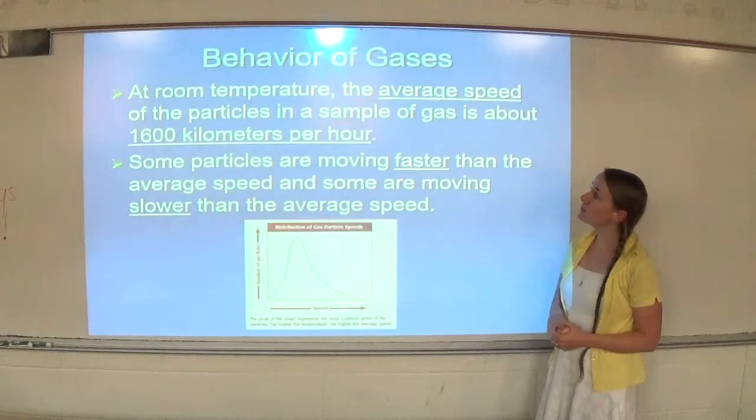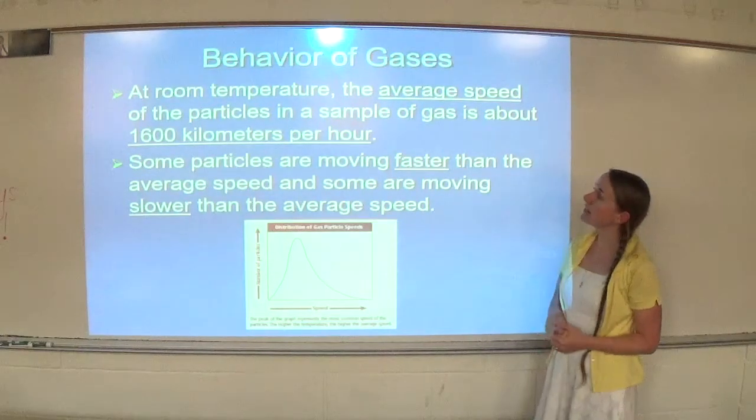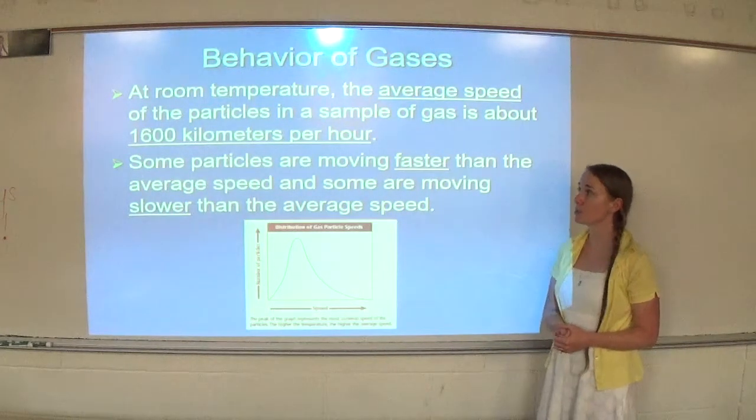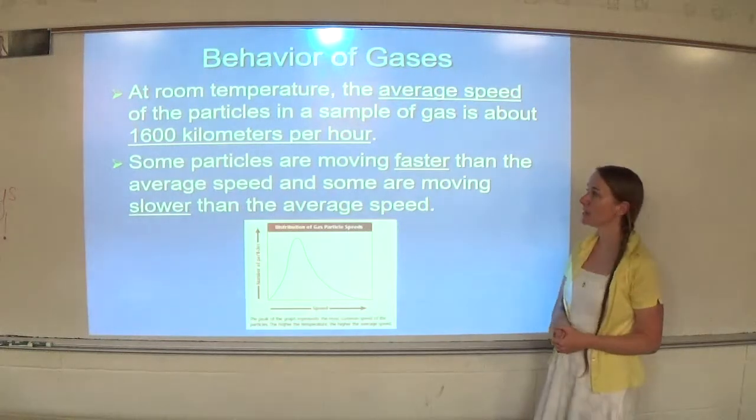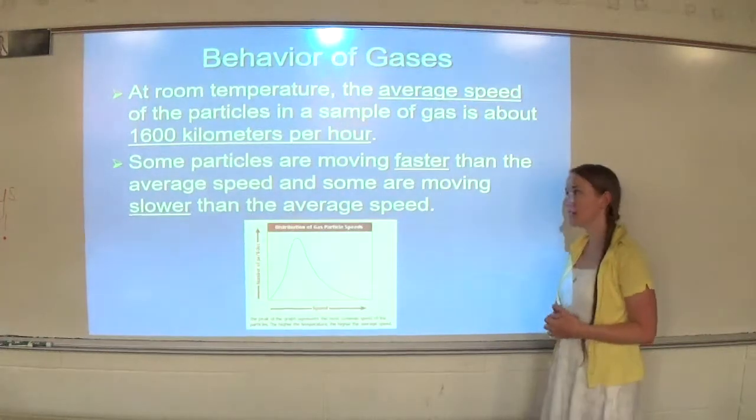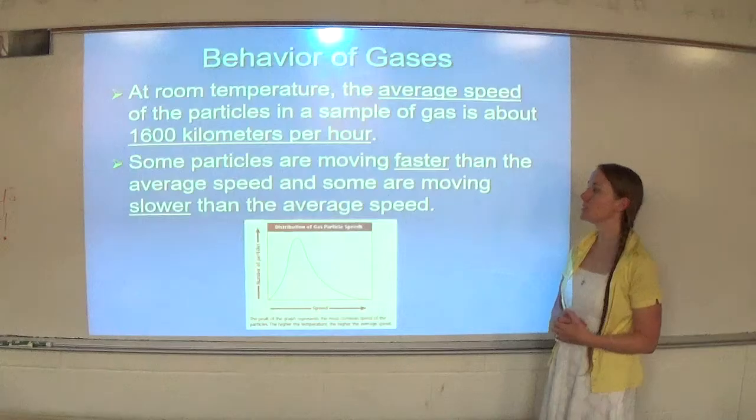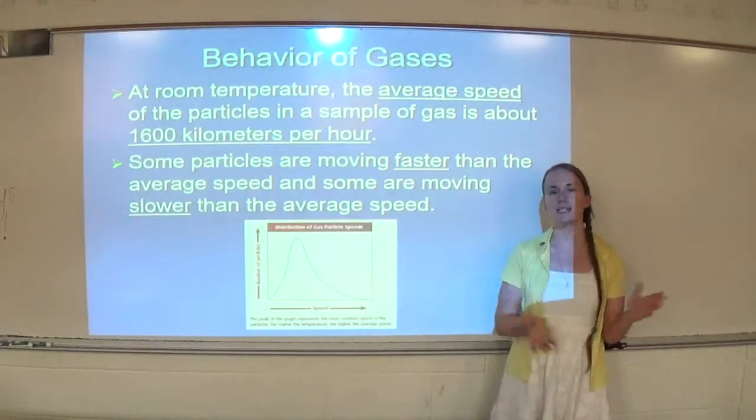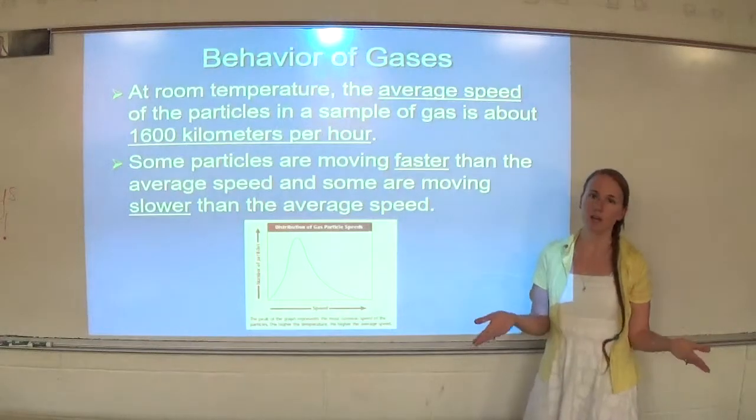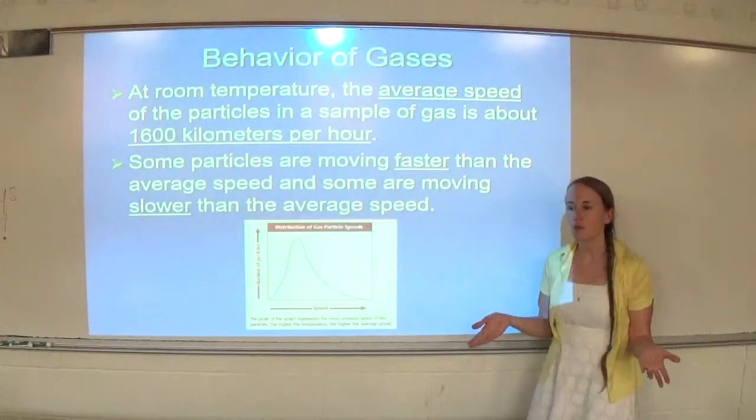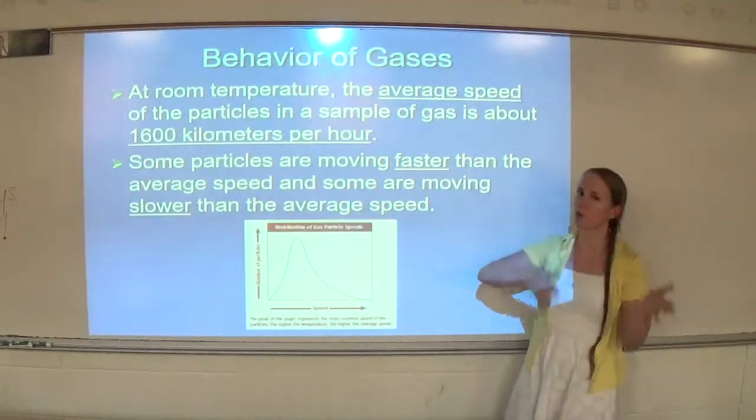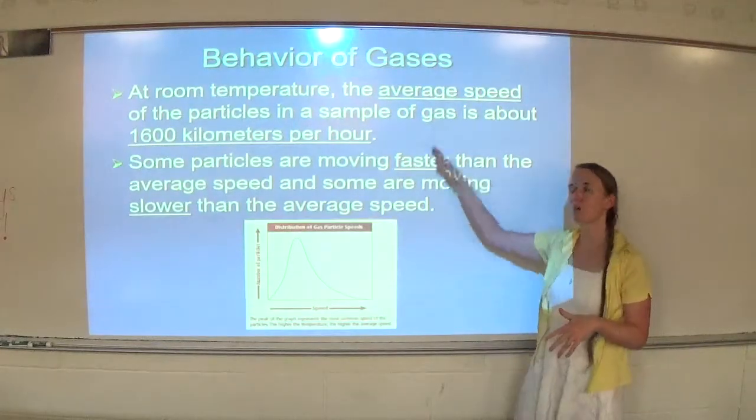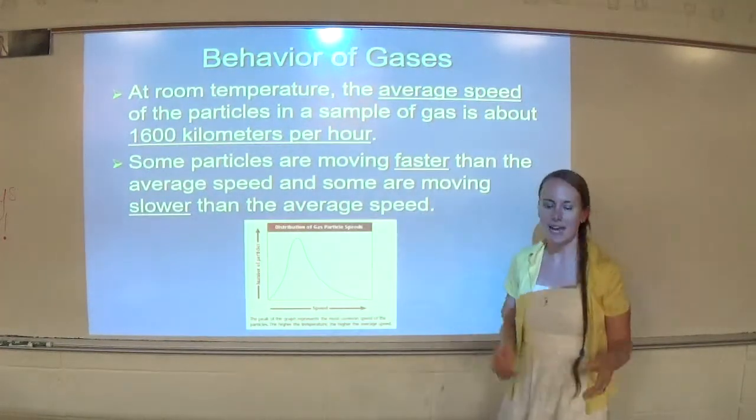At room temperature, the average speed of the particles in a sample of gas is about 1,600 kilometers per hour. Wow, that's really fast. Some particles are moving faster than the average speed, and some are moving slower than the average speed. Think about the average on a test. If I said our class average on the last test was an 84, that doesn't mean everybody made an 84. It means some people made higher, some people made lower. That's just the average. When we're talking about speed of particles, we're talking about the average also.